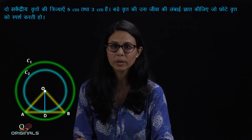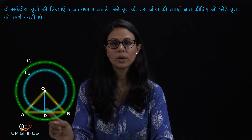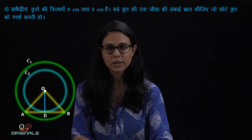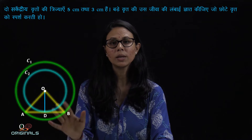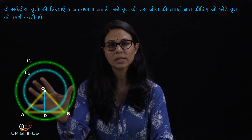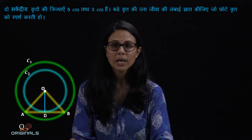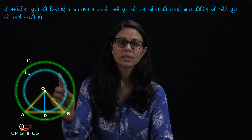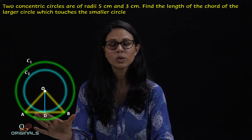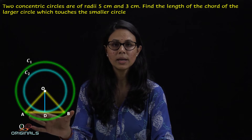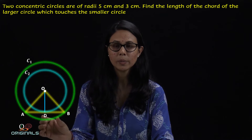तो हमको यहाँ पर given है: OA है 5 cm, OD है 3 cm. साथ-साथ, AB क्योंकि circle C1 की chord है, इसके लिए center से उस पर जो perpendicular draw किया गया है — OD — वो उस chord को bisect करेगी.